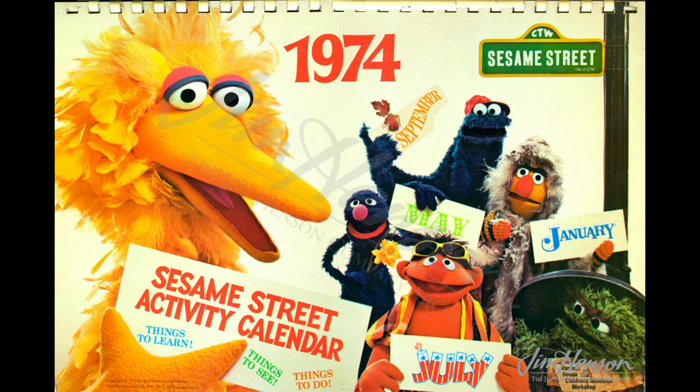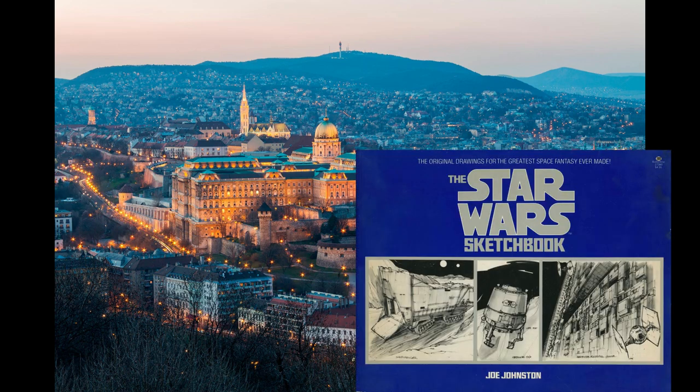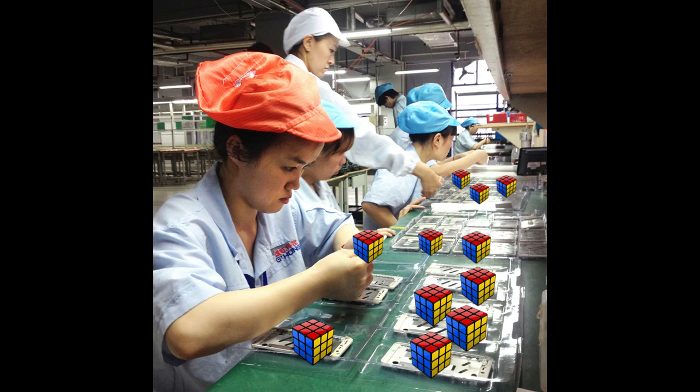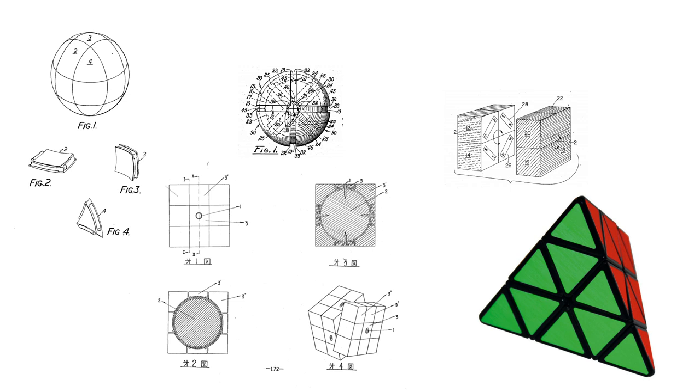It was invented in 1974, and a limited release in Budapest began in 1977. Except it wasn't the first. Yes, it was the first to be mass-produced, but it wasn't the first to be created or even patented. There are at least five other puzzles in a very similar fashion that were created before the Cube, some astonishingly similar to Rubik's.